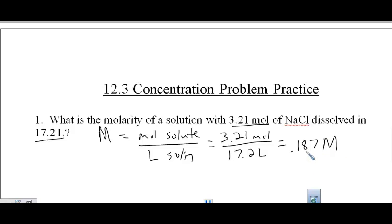And when I do that in my calculator, I have three sig figs, and I get 0.187 molar is how you would say it. It's a 0.187 molar solution of NaCl. So that's the first one, about the easiest type of molarity question you could get because you have moles and you have liters and all you need to do is divide.